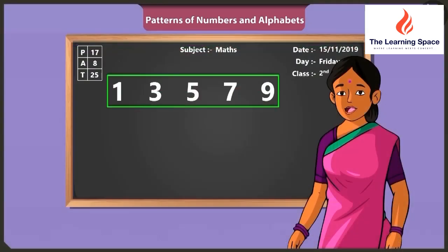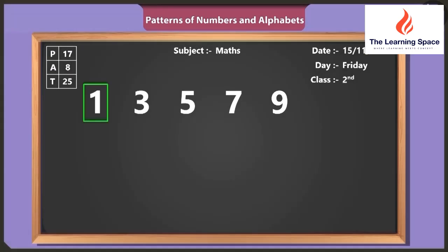Vinny, can you see a pattern in these numbers? One, three, five, seven, nine. These numbers are written in ascending order. So tell me, which number comes after nine? Ten comes after nine. No, Vinny. Look carefully. These numbers are written in a pattern. By adding one and two, you get three, and this is how the pattern builds up.